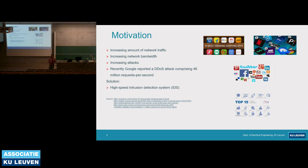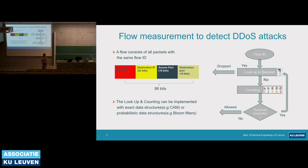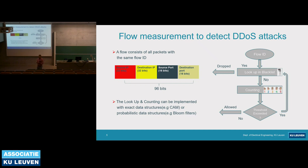In order to counter these and other kinds of threats, network security engineers and researchers have certain tools in their inventory, and intrusion detection systems are one of such tools. In this research, the application for our work is detection of large flow of data for distributed denial of service attacks. A flow consists of all packets that have the same flow ID. Typically it has source IP, destination IP, source port, and destination port for IP version 6 packets, and it can be modeled with 96 bits. Network intrusion can be detected if a flow exceeds a certain threshold.